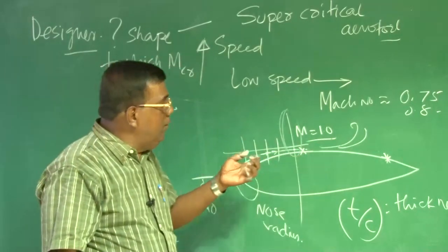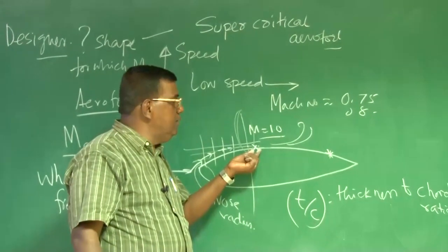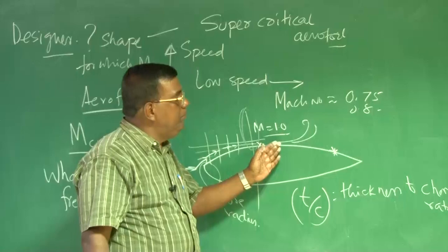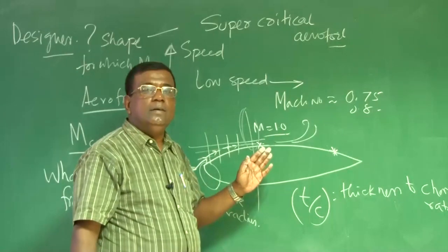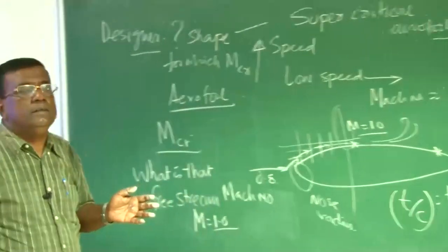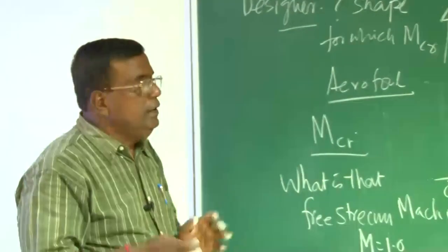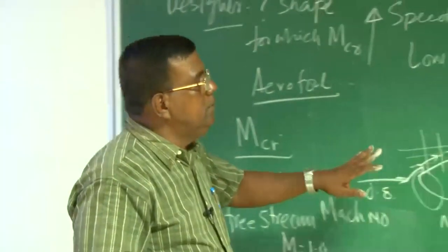I would like that flow should not separate at all. So, as a designer, I would like this point where the Cp, the pressure coefficient is zero, should be as backward as possible, right? And with this, so that my stall angle also increases. Critical Mach number increases. All those advantages we will get. So, we will be talking about that also.